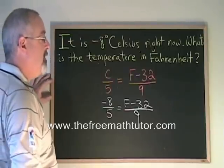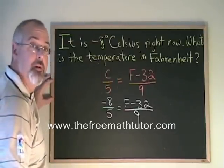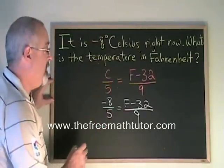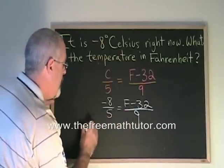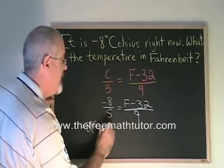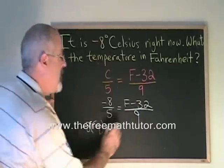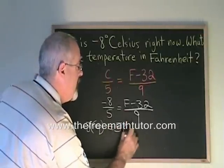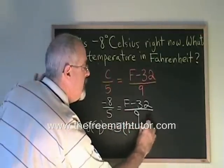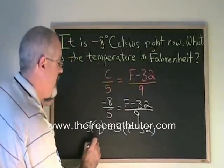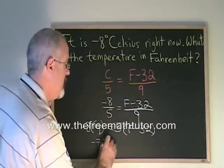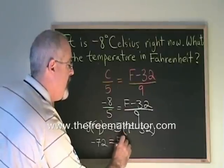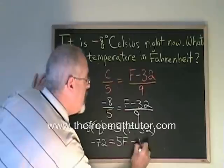I am going to use the fundamental rule of proportions to cross multiply and solve this. Top times bottom gives me negative 8 times 9 equals bottom times top gives me 5 times F minus 32. This becomes negative 72 equals 5F minus 160.